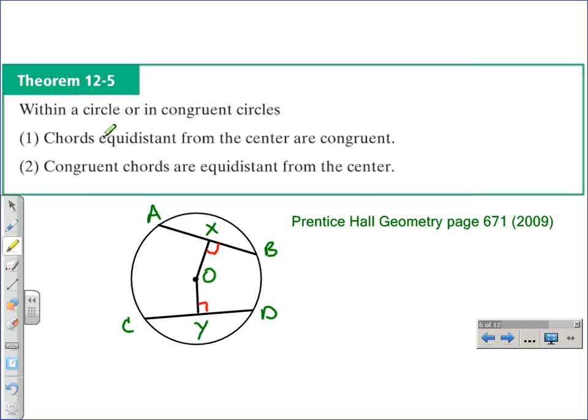Before we get into what part 1 means, let's talk about this idea of equidistant. Equidistant means they are the same distance. And the distance we're going to be referring to is the perpendicular distance.